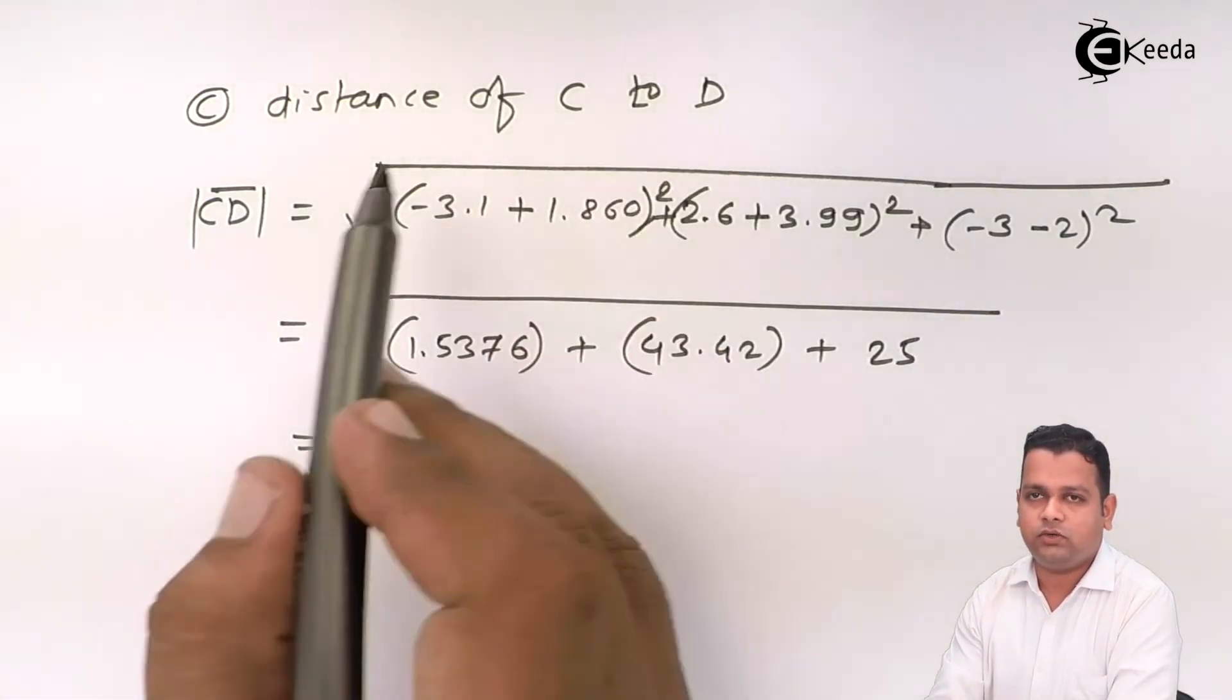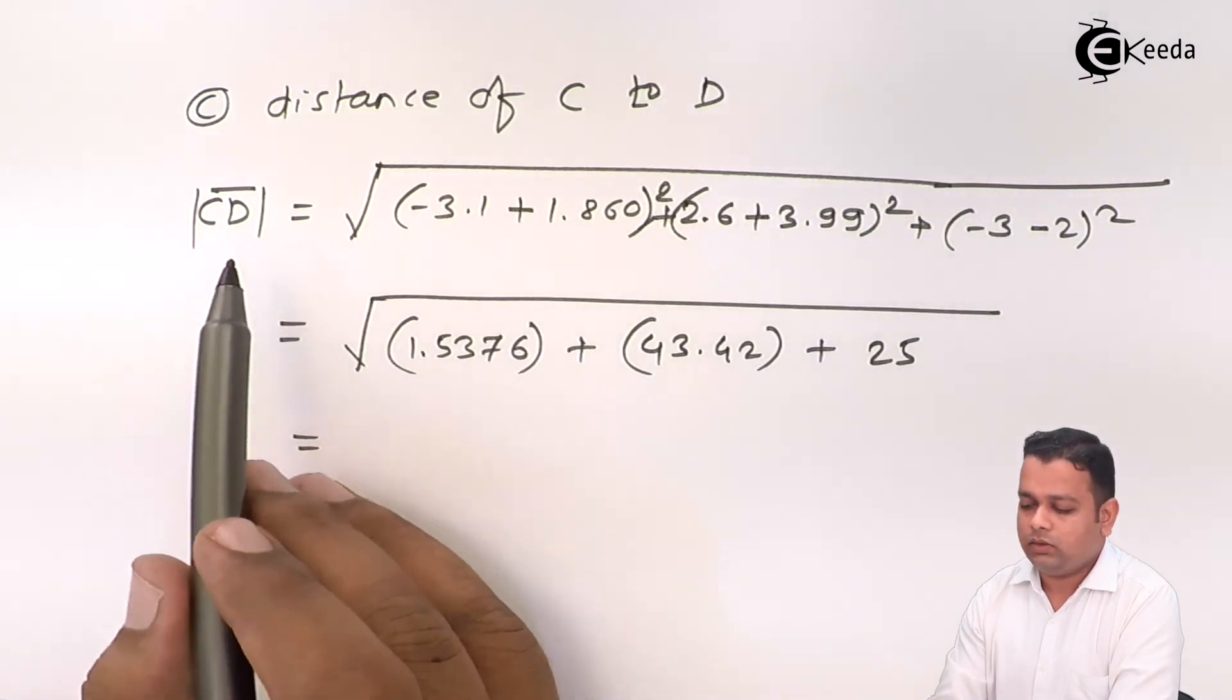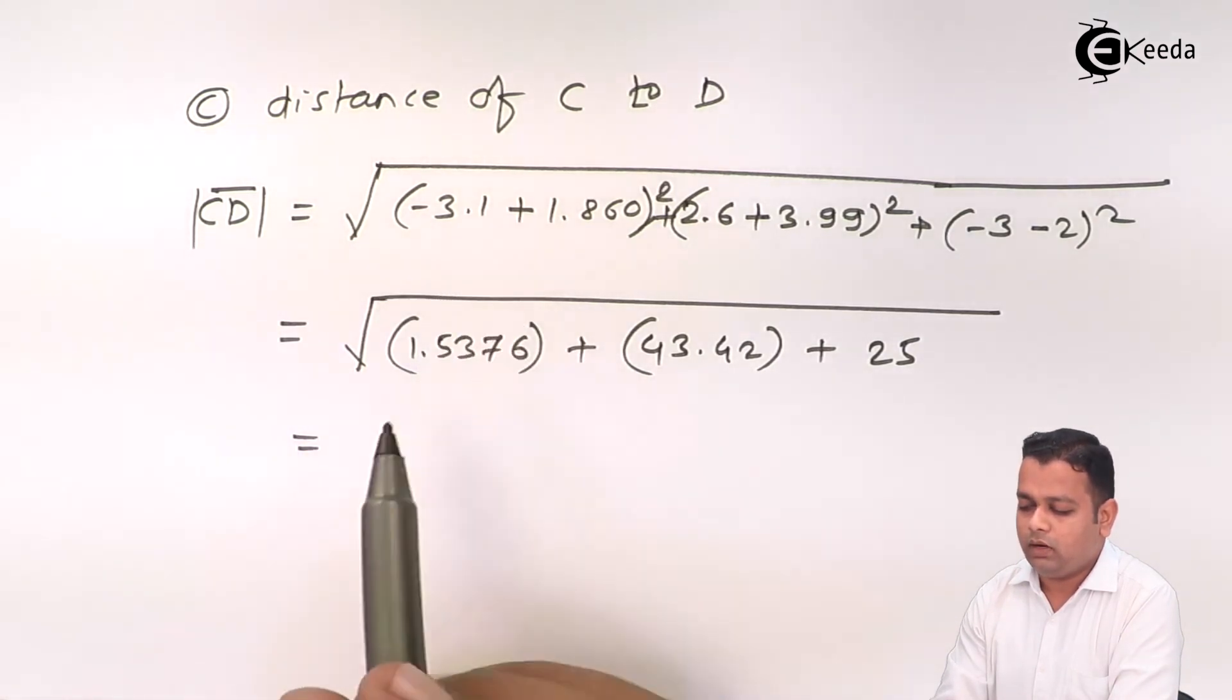So, finding distance C to D, we have mod of CD vector. The coordinates of point C are subtracted from that of the D and finally,